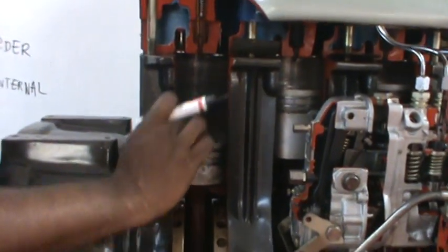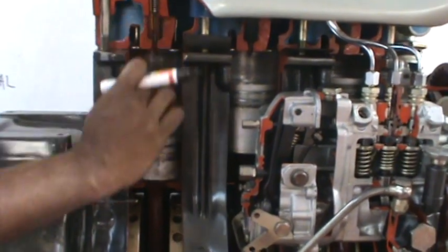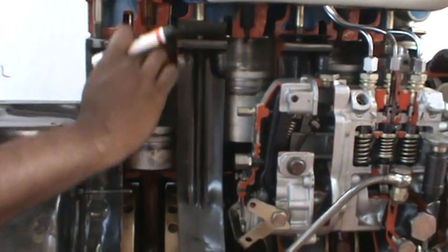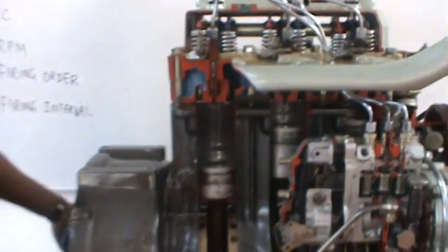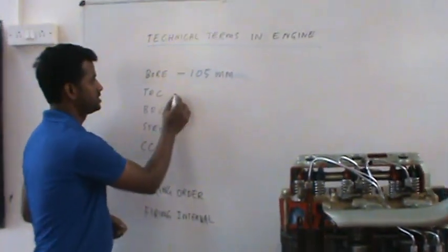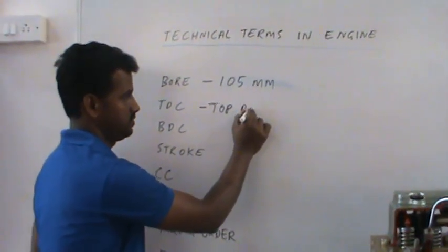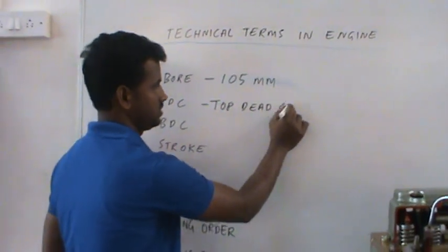The distance from TDC to BDC, top dead center to bottom dead center, is called as stroke. That means TDC means top dead center.